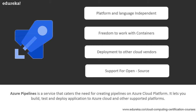Deployment to other cloud vendors is also supported. The fact that this is an Azure service does not mean it restricts your applications to Microsoft Azure only. If you have been using other cloud vendors or your end goal is to move to some other cloud platform, you can do that. Cloud platforms like AWS and GCP are supported. Azure Pipelines also has support for open source — Microsoft Azure has put in a lot of effort to ensure Azure is open to open source projects, applications, and tools, making it very easy to integrate open source services with Azure.